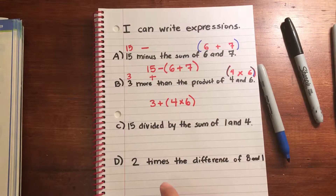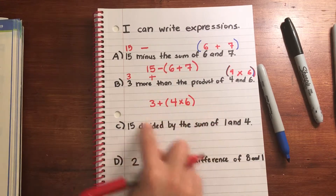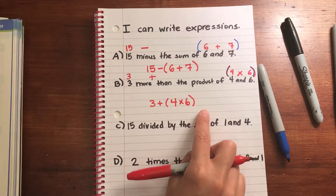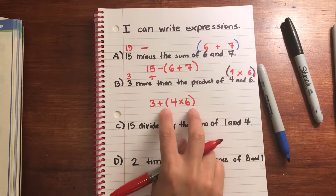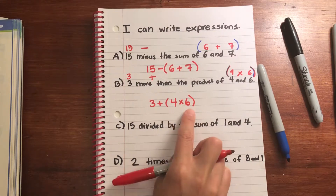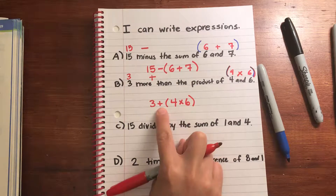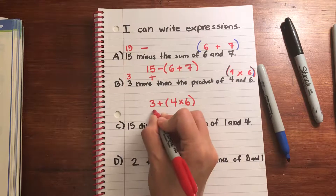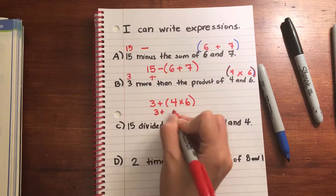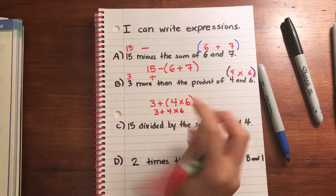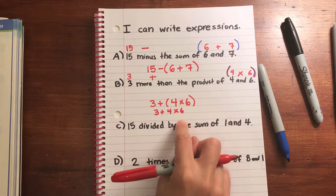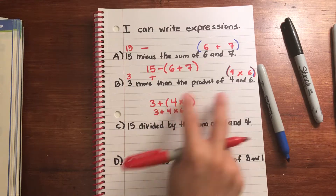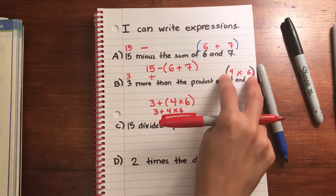One thing to note: looking at this with the order of operations, even if I didn't have these parentheses I would solve 4 times 6 first because multiplication comes before addition. So you can write it with or without the parentheses — you don't have to add them — but just to clarify that you want to do 4 and 6 first, it's good practice.